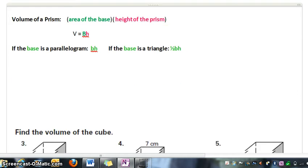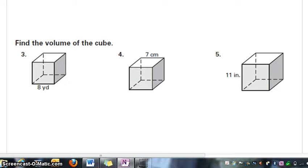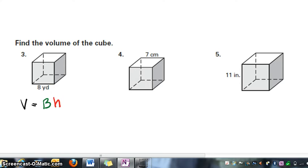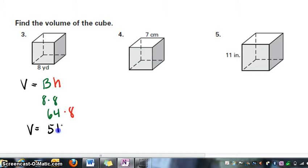Let's take a look at a couple of rectangular prisms. First we'll find the volume of cubes. We write our formula: volume equals area of the base times the height. For a cube it's pretty simple because all sides are the same length. So the area of the base is 8 times 8, or 64. Then we multiply that by 8. So 64 times 8 equals 512, and our volume is 512 cubic yards. You're multiplying 3 dimensions.